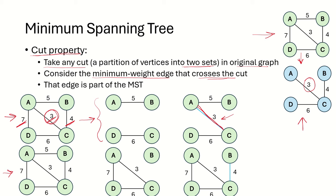Taking another cut example: vertices A, C, and D form one set and B forms another set. The edges crossing this cut are two edges, and out of these, edge BC has the minimum weight. This edge will always be part of the MST. You can cut the graph in various ways and always find that the minimum weight edge crossing the cut is part of the MST.